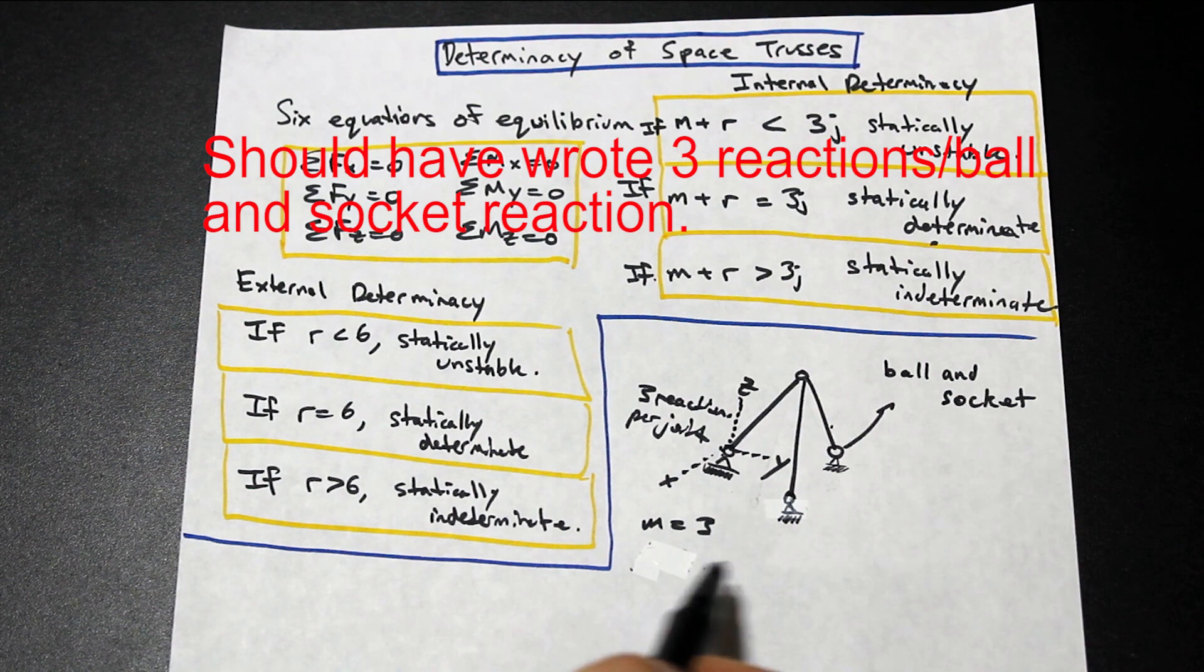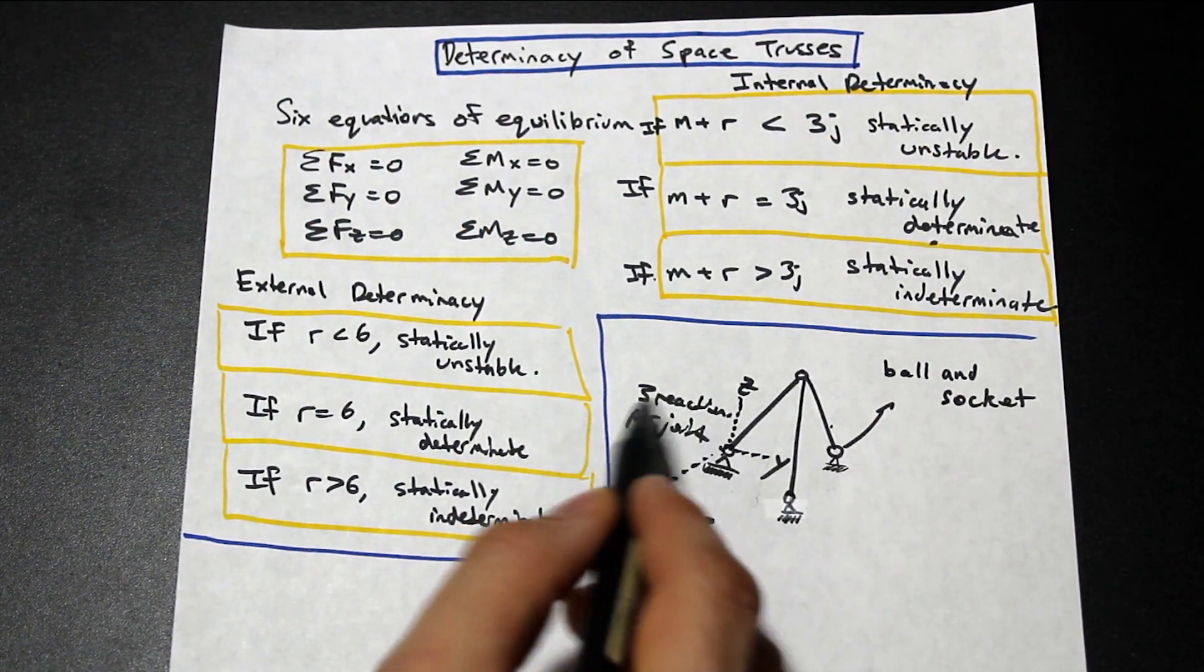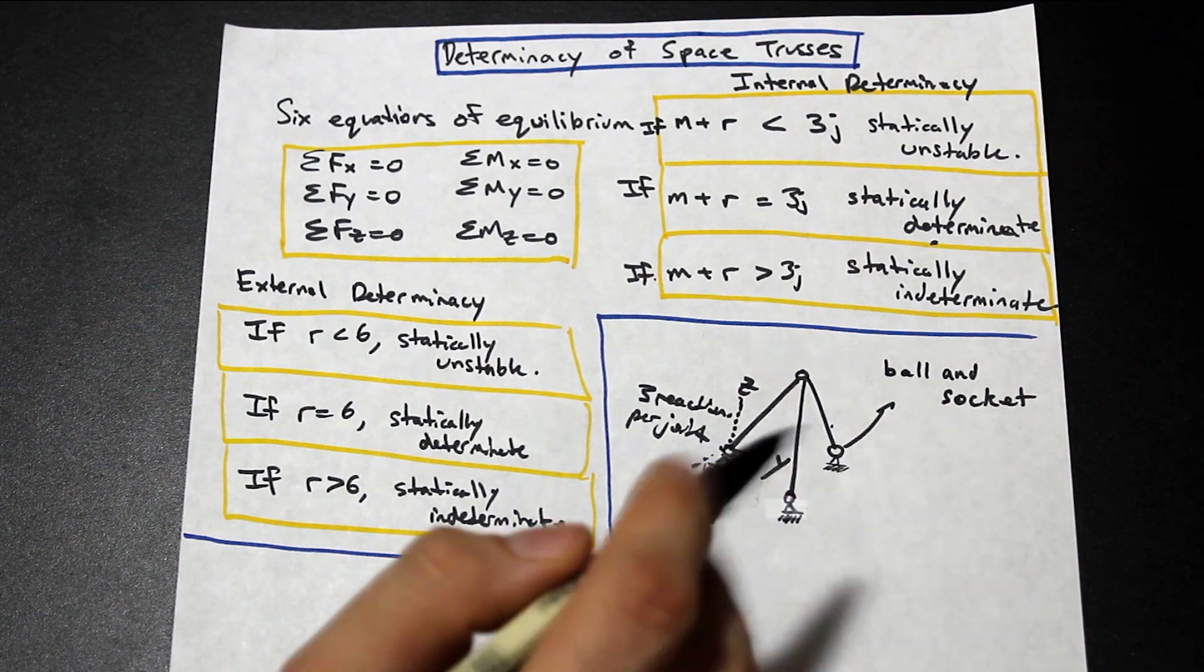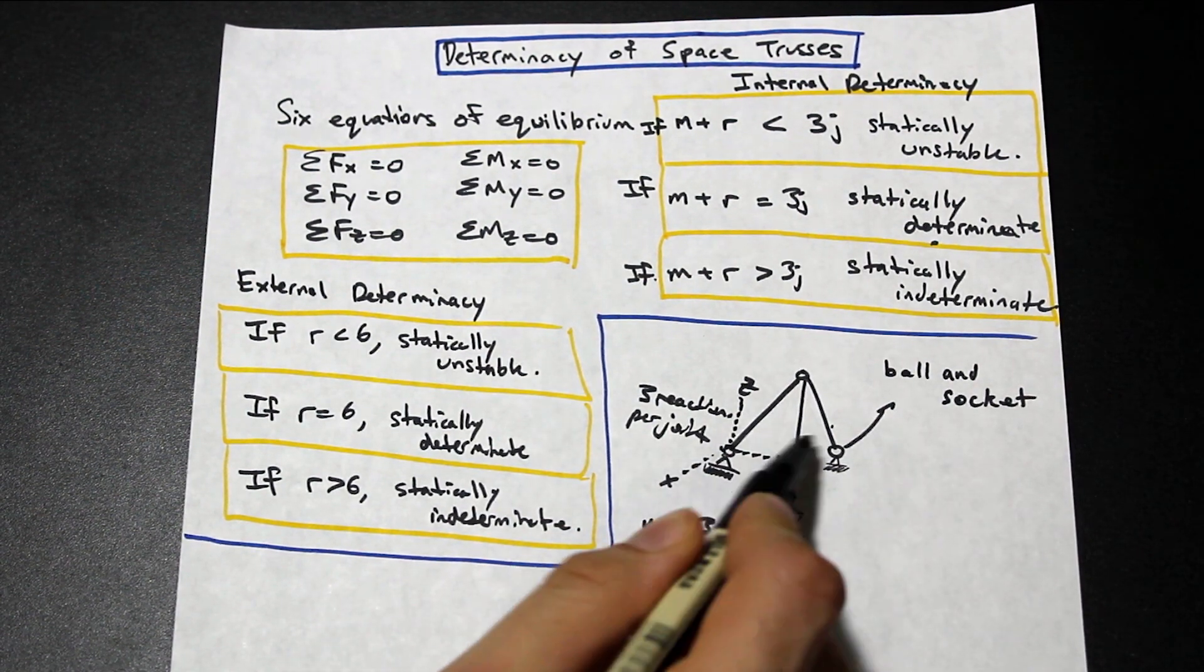Okay, so if we go ahead and we just, and we count those up, we have one, two, three reactions here. We have three reactions, three reactions per reaction, we'll say. Okay, so that our R is simply nine. We have nine total reactions here.